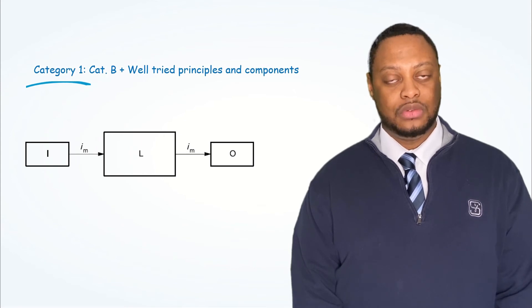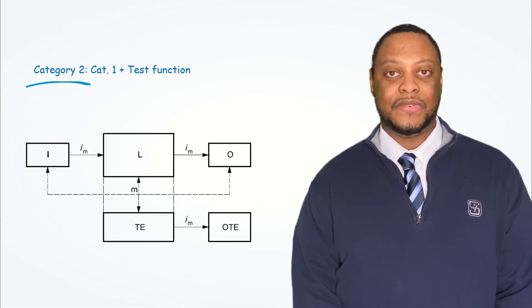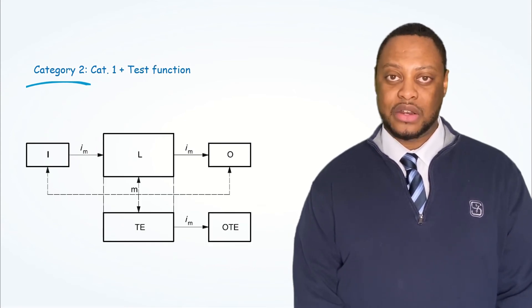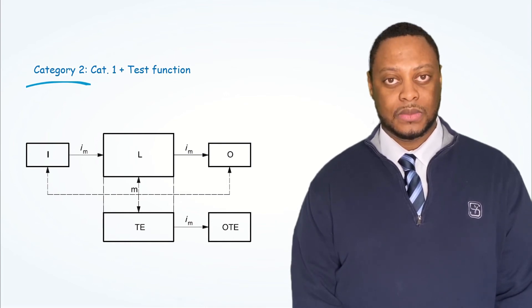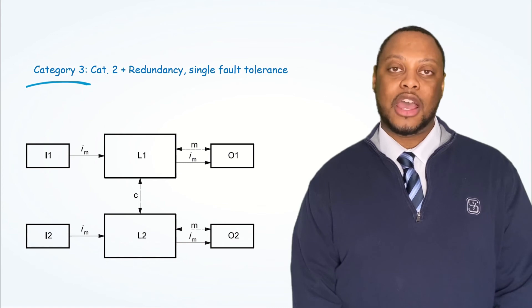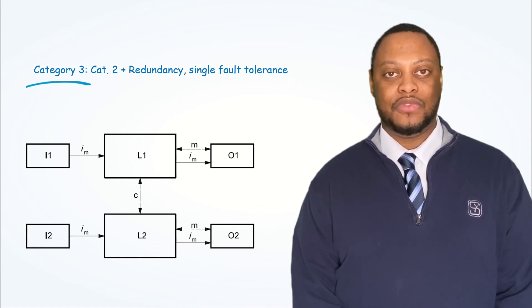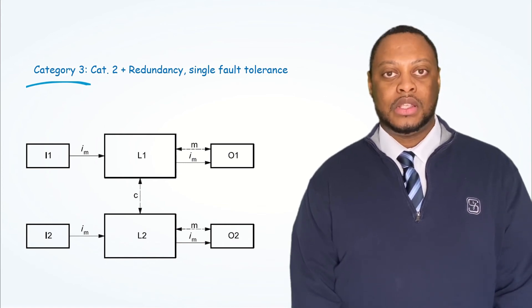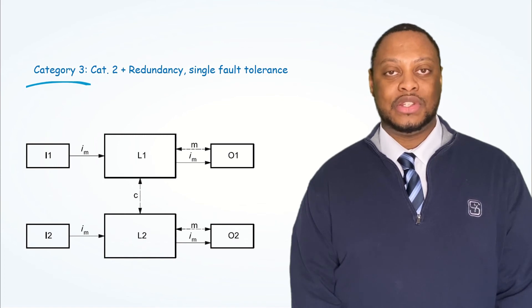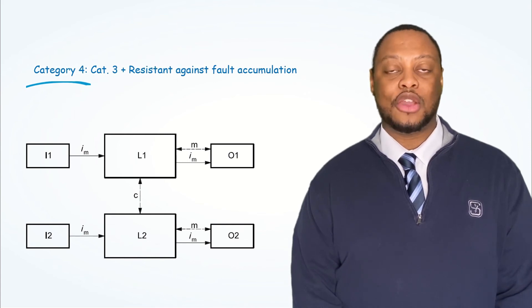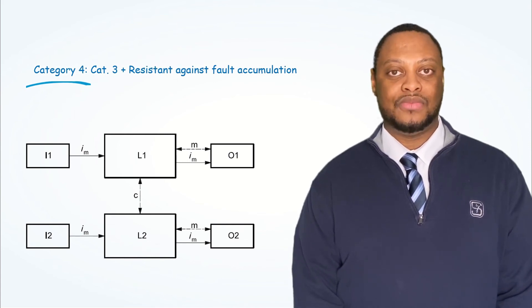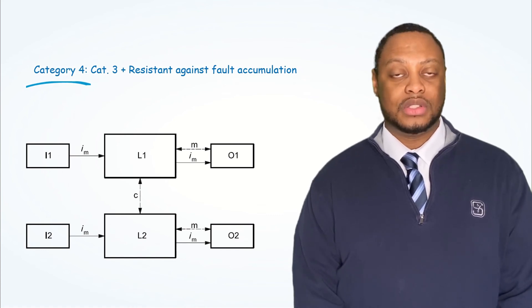Category 2 introduces a test function, still a single channel — one failure and we lose our safety function. Category 3 brings in the idea of a second redundant channel, so now we have the ability to detect a single failure and maintain safety. The last category is Category 4, which is again redundant with constant monitoring, but now we are resistant against fault accumulation.